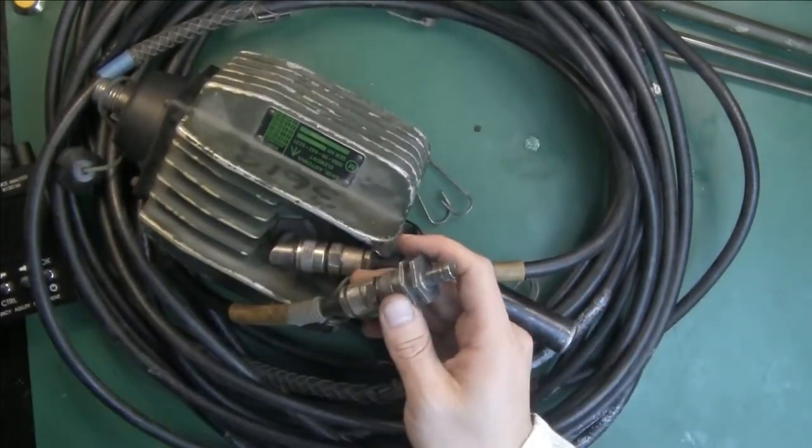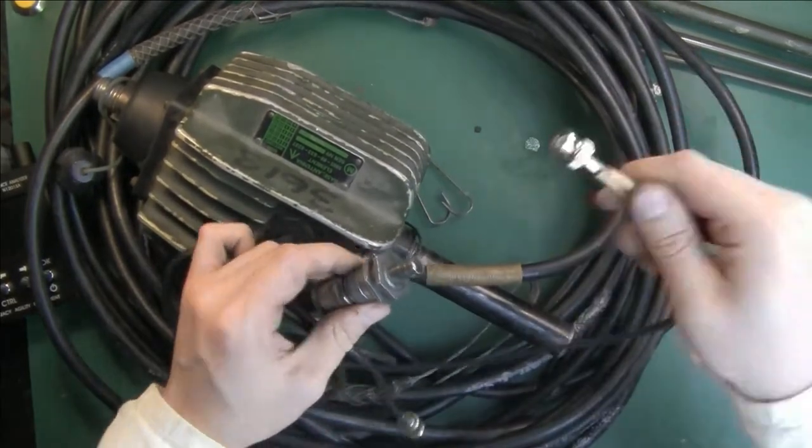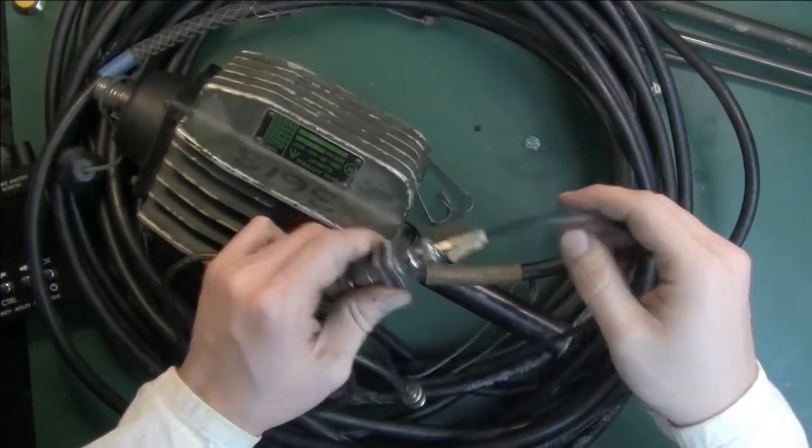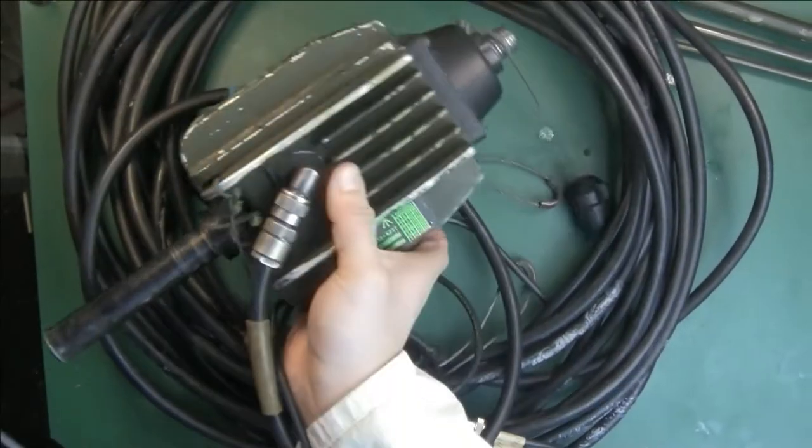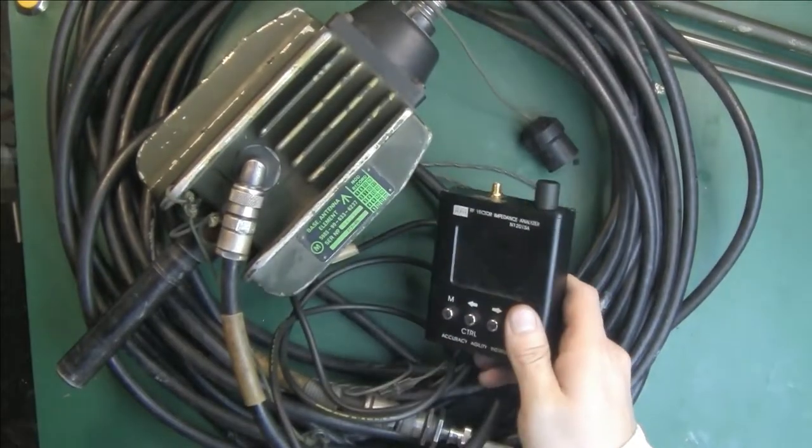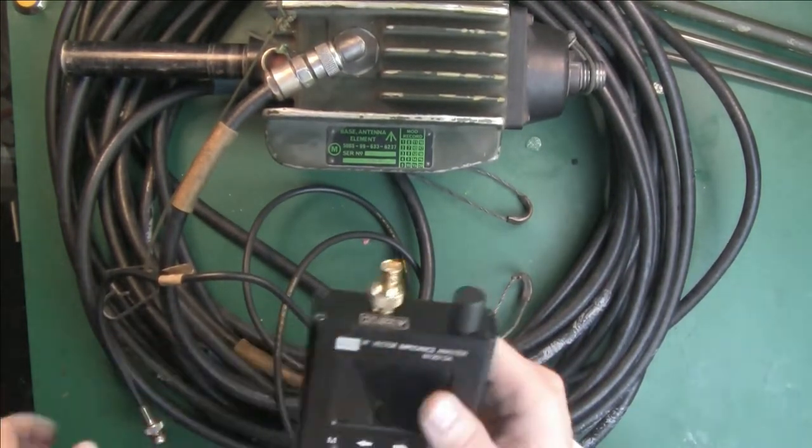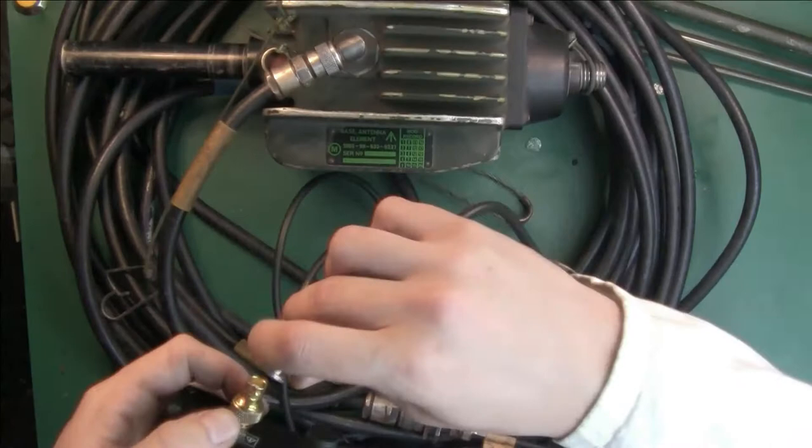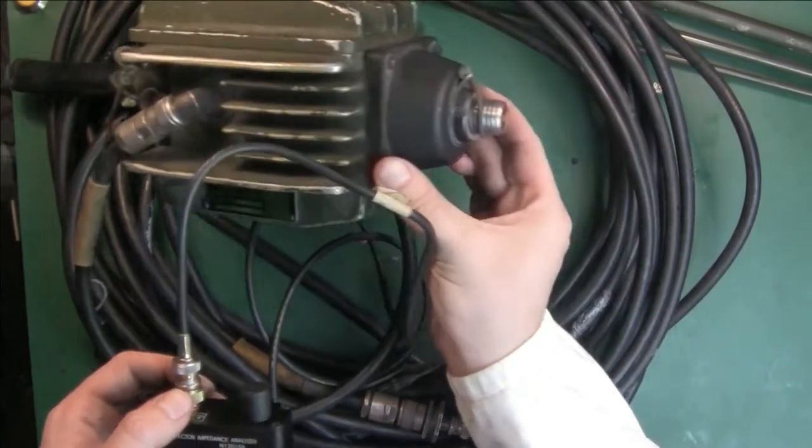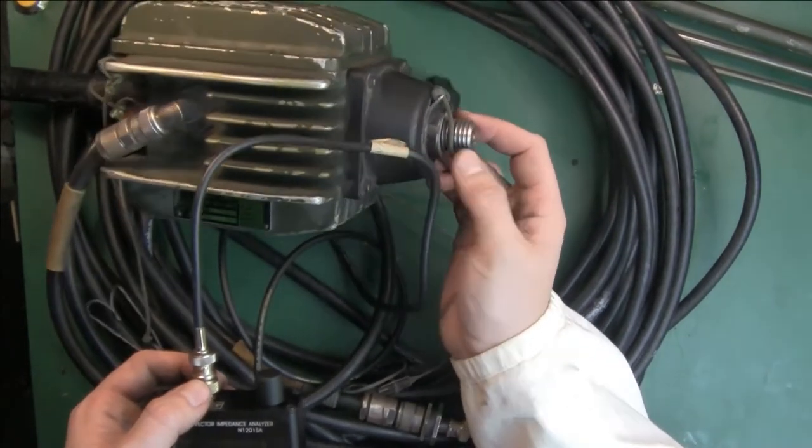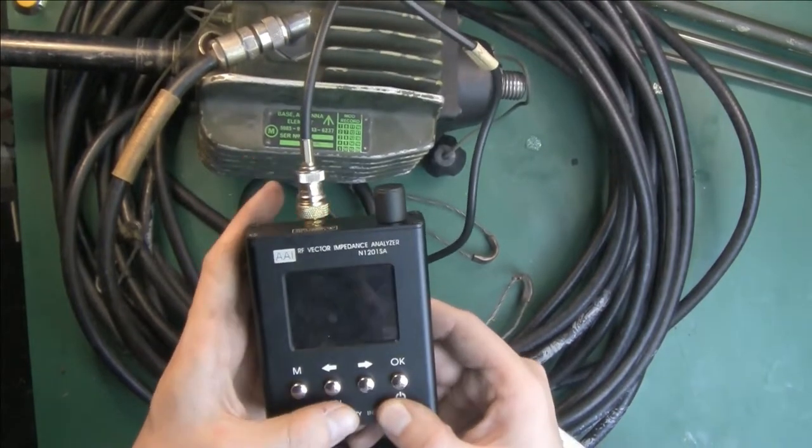On the other end we are going to connect a BNC cable, just a regular BNC cable, and we are going to connect to our impedance antenna analyzer. Okay, so I've got a proper adapter and now we can try this. I do not have any radiating element connected and we are going to see what kind of SWR we have.